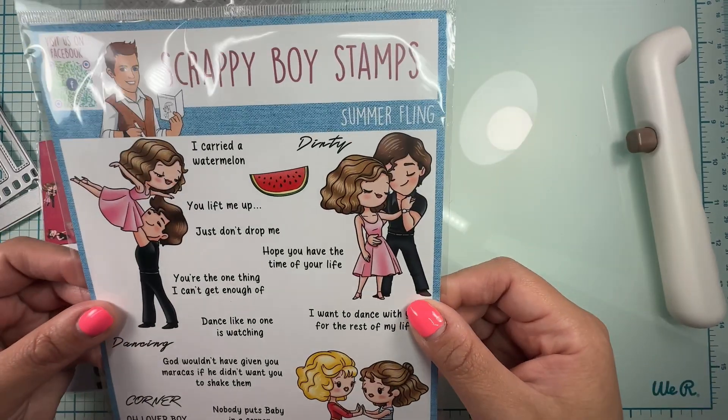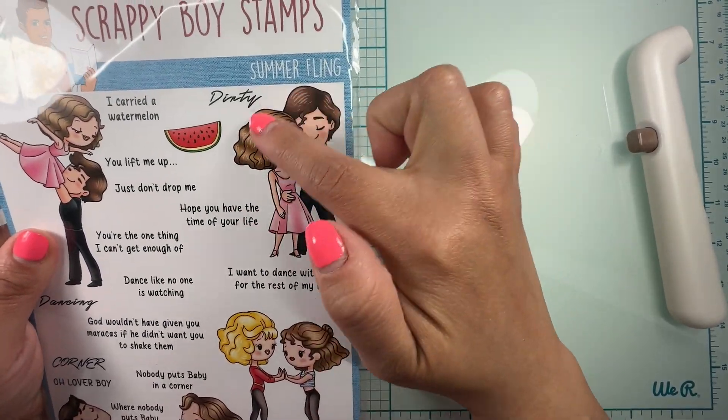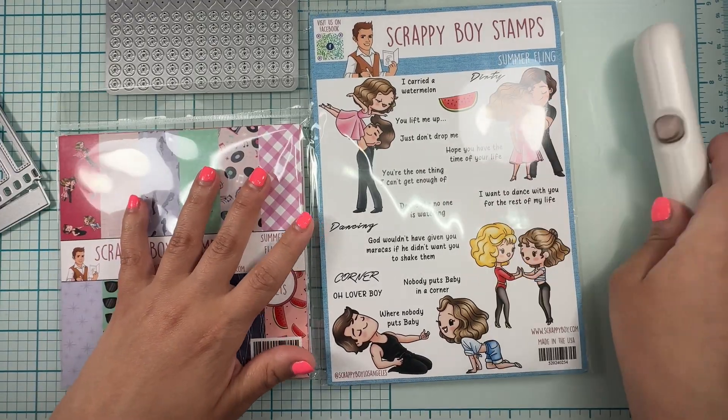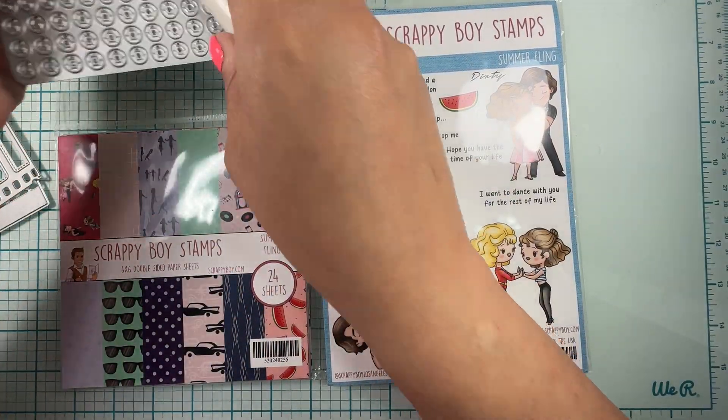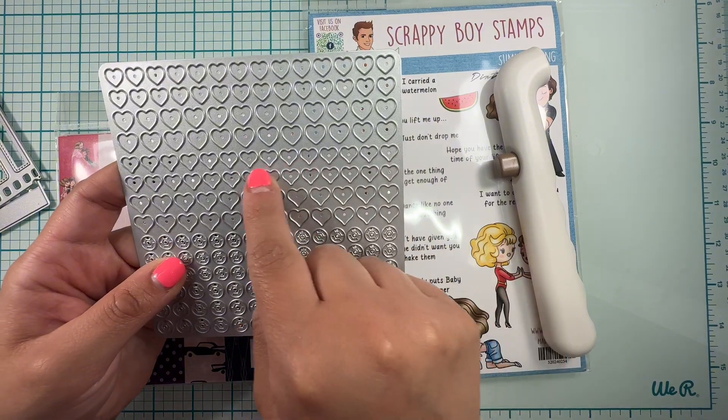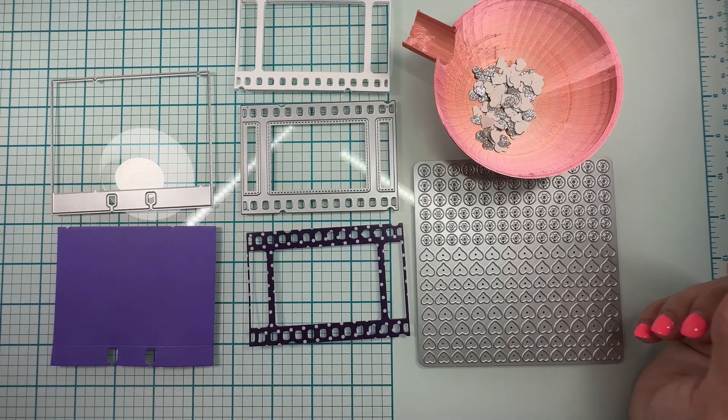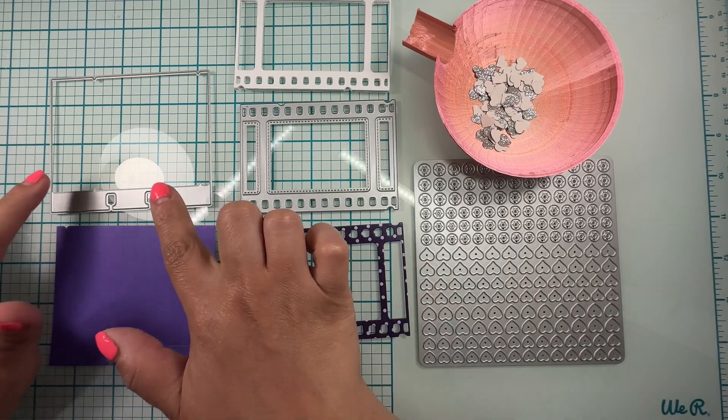And then we're gonna use the summer film clear stamp set, this image right here, and I'm also going to use one of the shaker plates. Let's go ahead and get started.